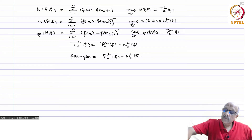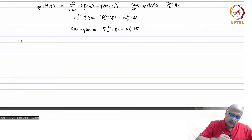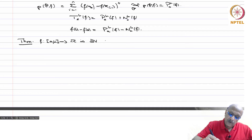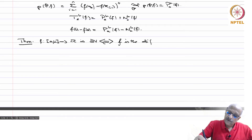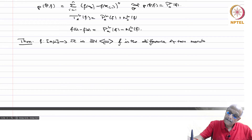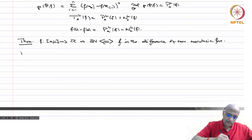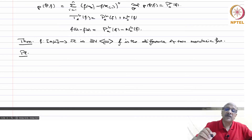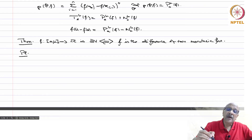Now this will help us characterize functions of bounded variation. We have the following theorem: f: [a,b] → R is of bounded variation if and only if f is the difference of two monotonic functions. This is a nice characterization — no supremum needed. If f can be written as the difference of two monotonic functions then it is BV, and vice versa.